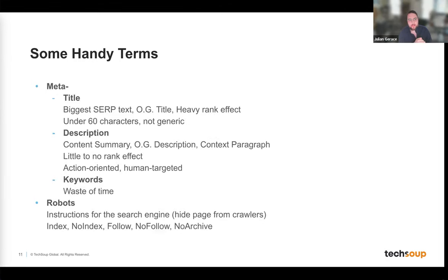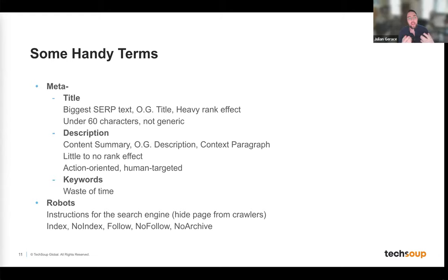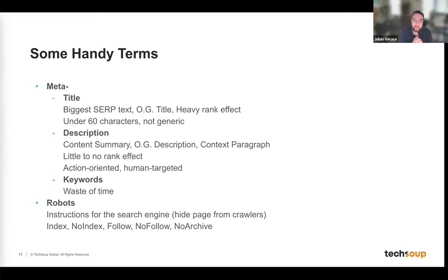Some other terms: the meta title is the blue text in a Google search result. You can set it specifically. Make sure it's formatted correctly and includes the keyword you want to rank for — it has a heavy ranking effect. You want it unique for each page on your site. The meta title is one of the most impactful things you can optimize.